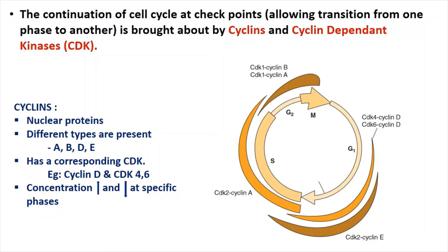Here is a brief description about cyclins. Cyclins are nuclear proteins and there are different types present: A, B, D, and E. Each cyclin has its own cyclin-dependent kinase. For example, cyclin D acts with its kinases CDK4 and CDK6. Another important point is that their concentration increases and decreases at specific phases in the cell cycle.